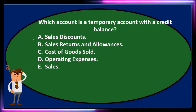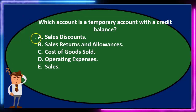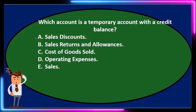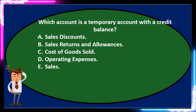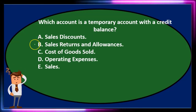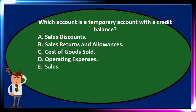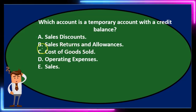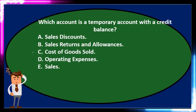Using process of elimination: A) sales discount — it seems like it's a temporary account because sales discount is on the income statement, but we might be confused about whether it has a debit or credit balance, so we'll keep it for now. B) sales returns and allowances — also a temporary account, but again unclear if debit or credit because it has 'sales' in it. Is it revenue or an expense account? We'll come back to that.